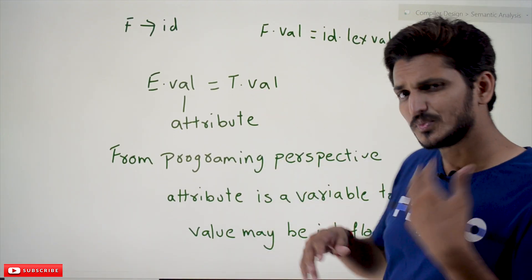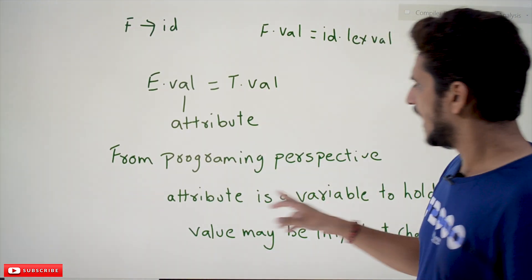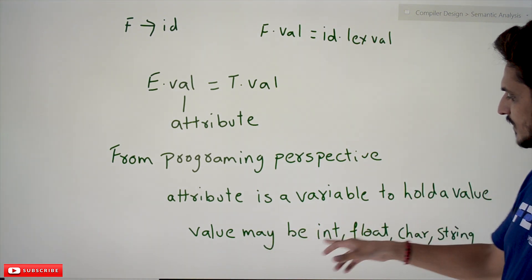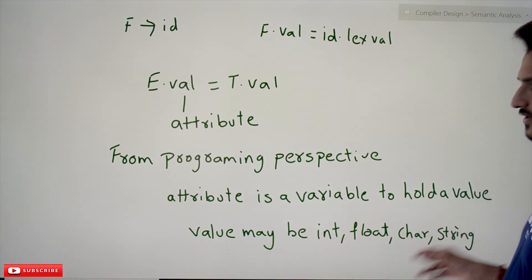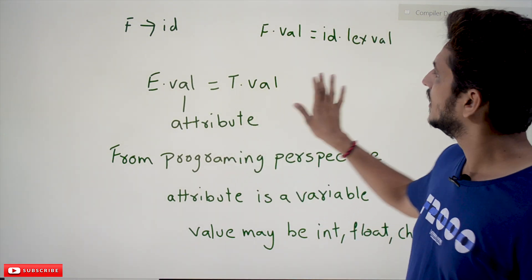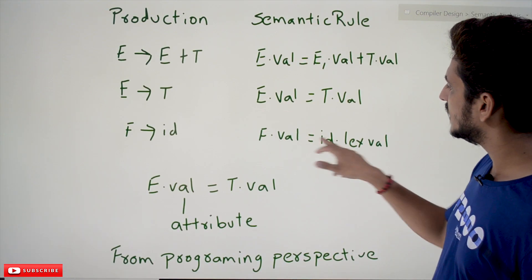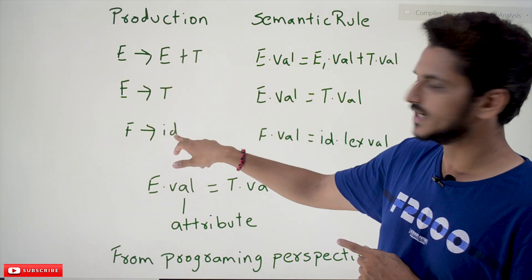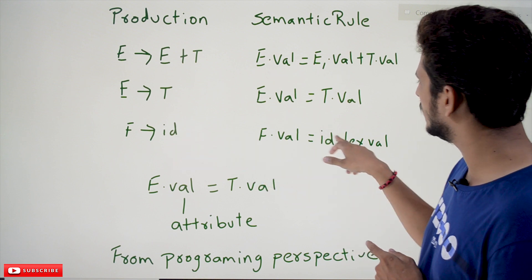From the programming perspective, attribute is a variable to hold a value. The value may be int, float, char or string. You can take any value in the attribute. One more important point: we are writing attributes not only for non-terminals but also for terminals.